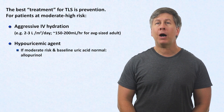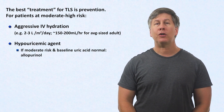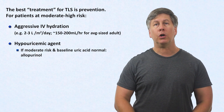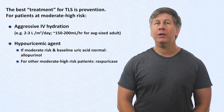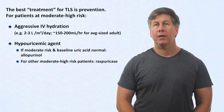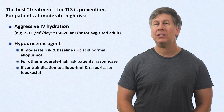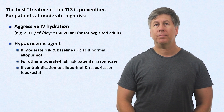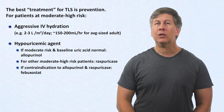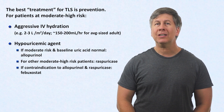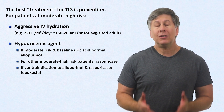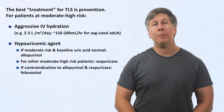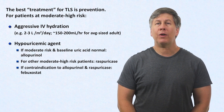If the patient is at moderate risk of TLS and the baseline uric acid level is normal, use allopurinol. For all other moderate to high-risk patients, use rasburicase. And if there is a contraindication to these agents, you can use febuxostat. I want to take a quick digression to discuss how these medications work because it's interesting biochemistry and it is clinically relevant.